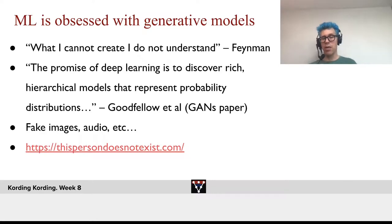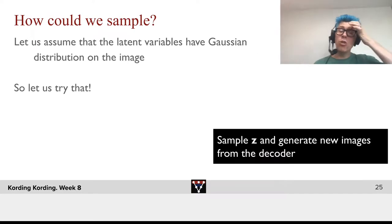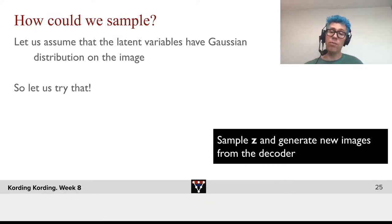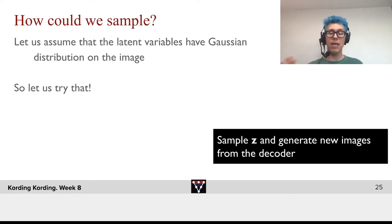And that's like a great webpage — "This person does not exist." You go there, and every time you go there, it gives you a new portrait. This is a wonderful service if you want to produce fake reviews for Amazon. So, how should we sample to produce a good probability distribution of potential images? In a fast approximation, let us assume that the latent variables have a Gaussian distribution. We sample Z and generate new images from the decoder, and let's see if they actually look like the real thing and have the same distribution.